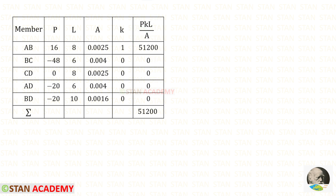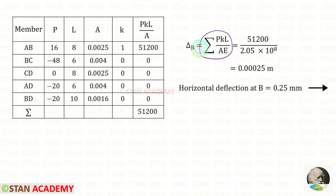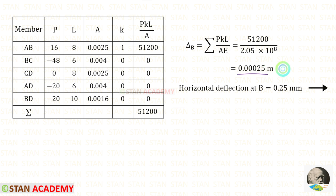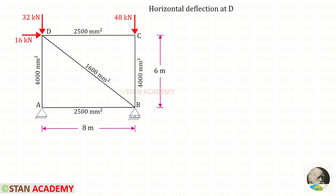Let us enter all of the values of K, then we have to find P·K·L / A for each member. After adding all of them we get the summation. Using the formula for deflection — summation of P·K·L / A — we apply the Young's modulus, which is the same for all members as given in the question. Finally we get the horizontal deflection at B. We got a positive value, meaning our assumption is correct — the horizontal deflection occurs towards the right side.